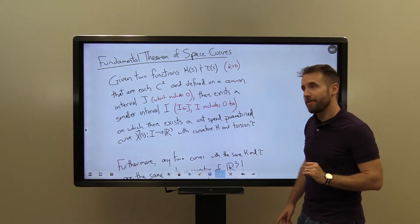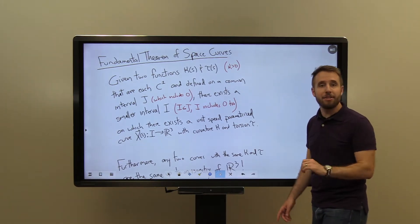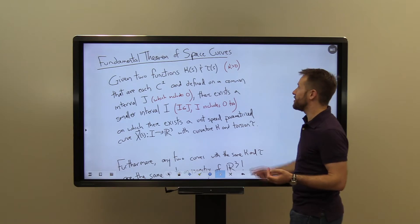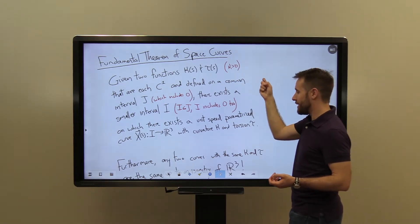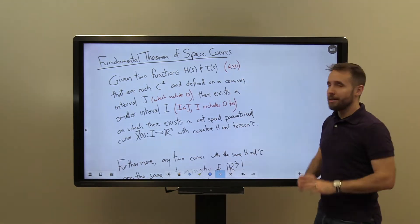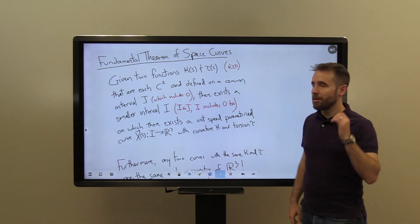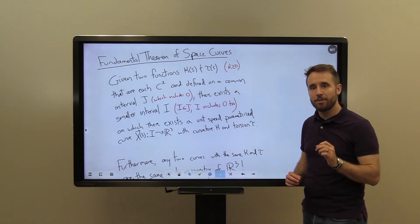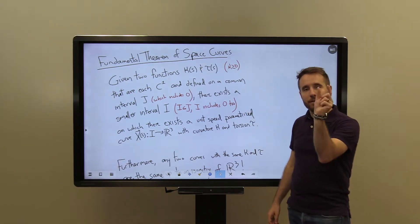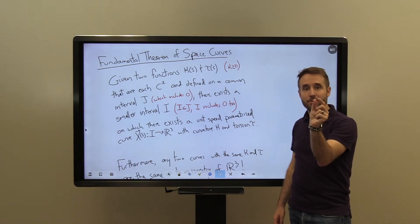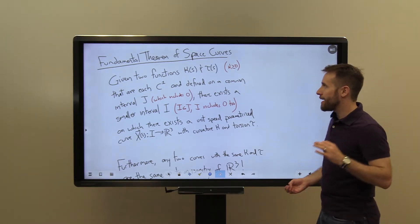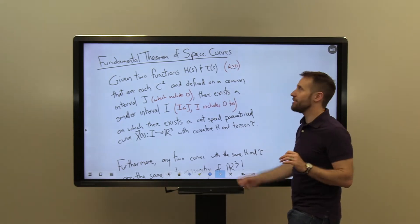It's going to look very similar. First, given any two functions kappa(s) and tau(s), with the specification that kappa is a non-negative function — greater than or equal to zero — and given that each of these functions are C1 and defined on a common domain, which we'll call an interval J, there exists a smaller interval I and a parametrized curve defined over I for which the curvature function is kappa and the torsion function is tau.